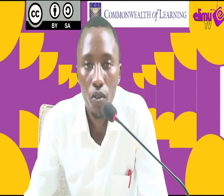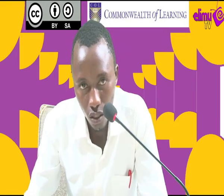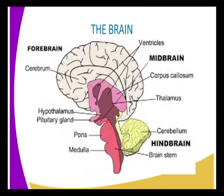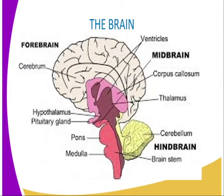Before that, we can have the following lesson goals, whereby by the end of the lesson we should be able to draw and label the structure of the brain. These are diagrammatic representations of the brain, and as you can see, we have got the forebrain, the midbrain, and what we call the hindbrain.